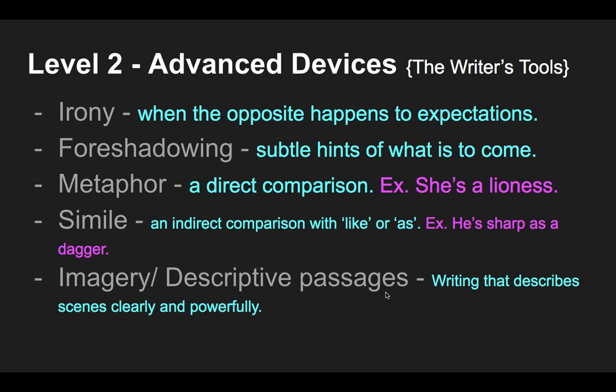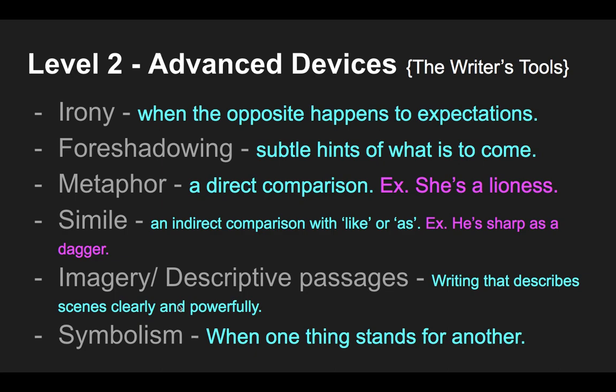Next are imagery or descriptive passages — scenes written to capture a moment in words. The Lord of the Rings has many of these. You'll know them because the writer takes time to carefully describe detail. Finally, symbolism is somewhat related to metaphor and simile — something stands for something else — but symbolism often has a larger cultural or mythological meaning. Symbols tend to carry throughout an entire story, whereas a metaphor or simile is more of a snapshot description of a character.